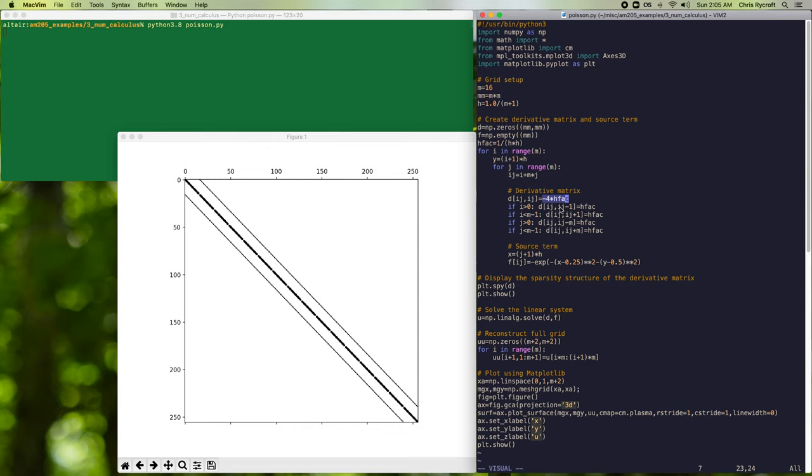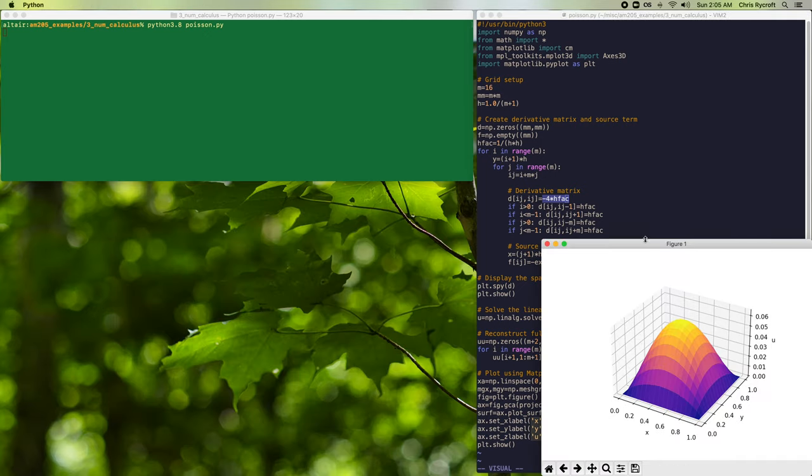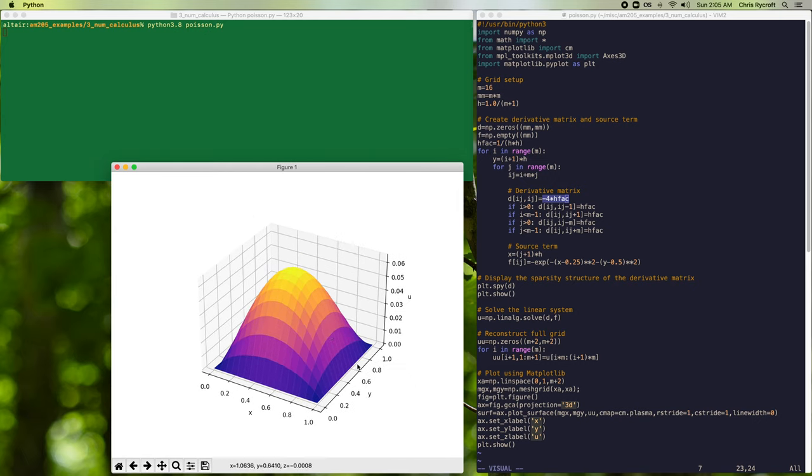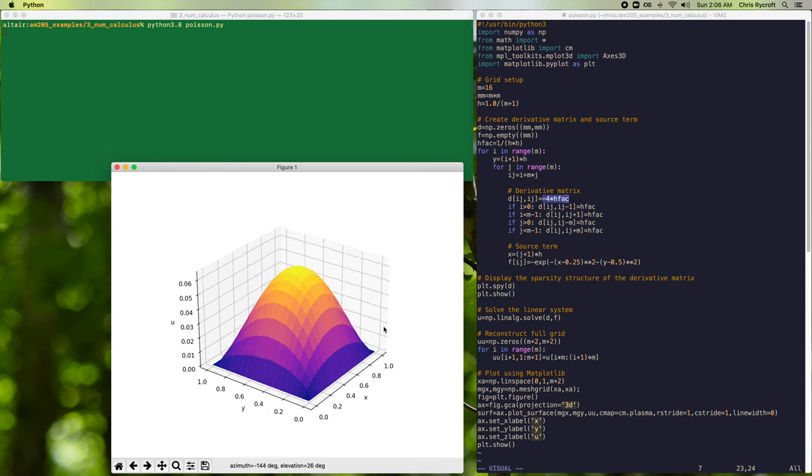And then we have terms on the lower and upper diagonals corresponding to the left and right neighbors of the current grid point. And we then have two diagonals that are further away that correspond to the lower and upper neighbors of our current grid point, that are displaced by a distance of m in the matrix indexing.